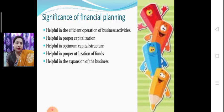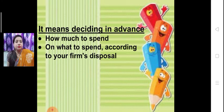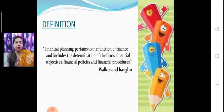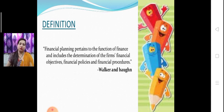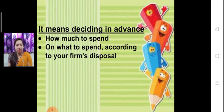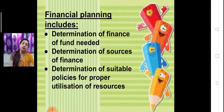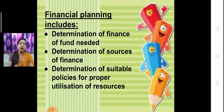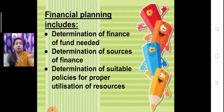Let's review again. This is a complex topic, which is why the chapter is divided into four parts. Financial planning means deciding in advance what to do, how to spend, and on what to spend according to the cash flow position of a company. Financial planning includes: determination of fund needed in a company, determination of sources of finance from where the fund is required, and determination of suitable policies for proper utilization of funds — meaning efficient policies so that resources are fully utilized.